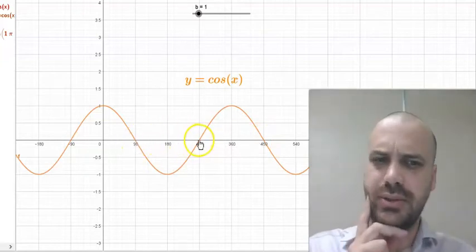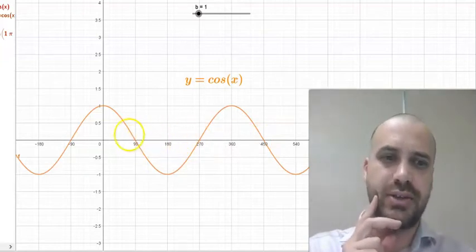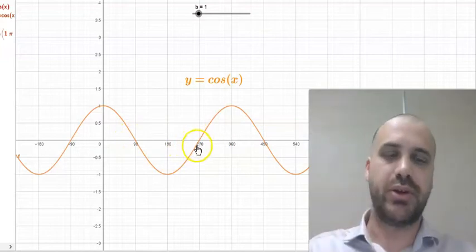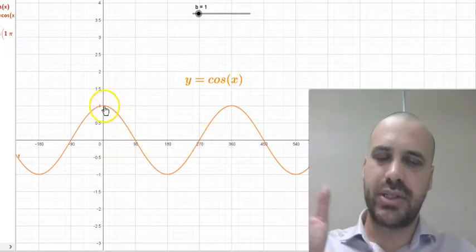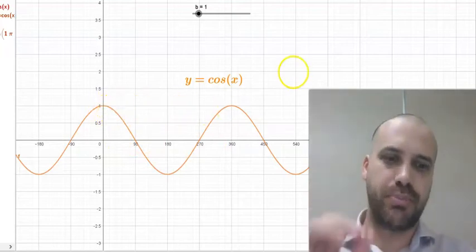It's not from the middle to the middle because this is the middle heading down, the scary part, and this is the middle heading up, the bit where you're anticipating the roller coaster. That's not the period. It's the distance that it takes for our function to repeat.